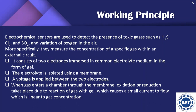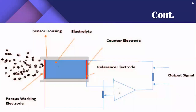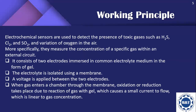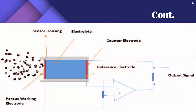The operation of an electrochemical sensor consists of two electrodes. These two electrodes are immersed in a common electrolyte medium in the form of a gel. The electrolyte is isolated using a membrane.